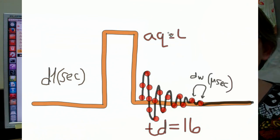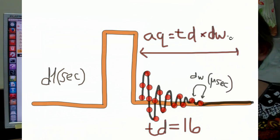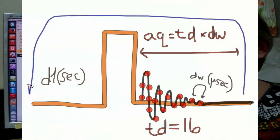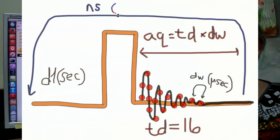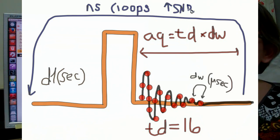Number 4, TD, the number of digitization points, which you'll adjust to control the time that the detector is on. And number 5, NS, the number of FIDs to be signal averaged in order to improve the signal to noise ratio.